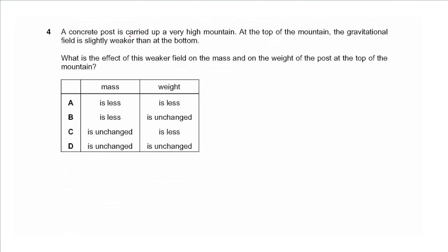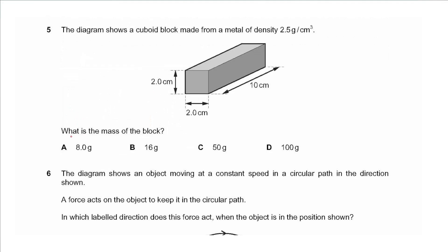Question 4 says a concrete post is carried up a very high mountain. At the top, the gravitational field is slightly weaker than at the bottom. What is the effect of this weaker field on the mass and on the weight of the post? The mass does not change — it is unchanged — and the weight is less because weight is proportional to the gravitational field strength, so the answer is C.